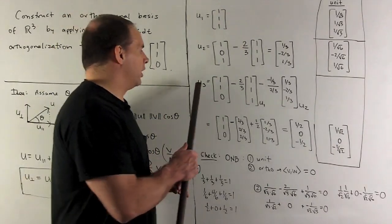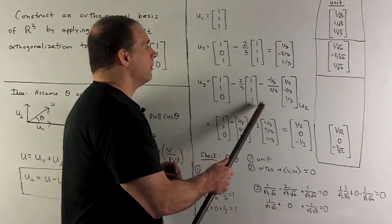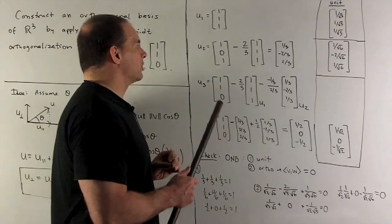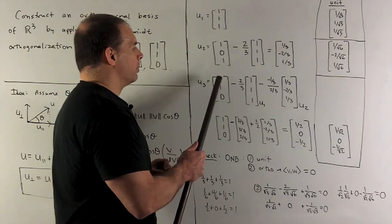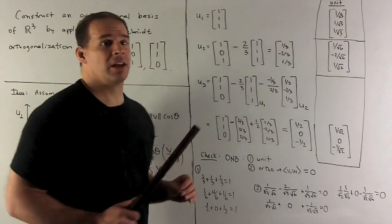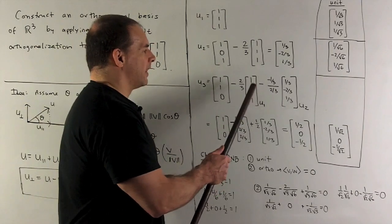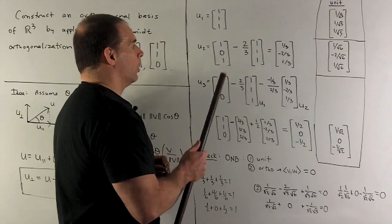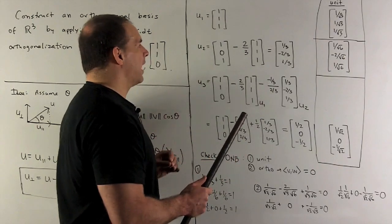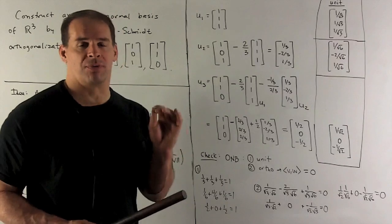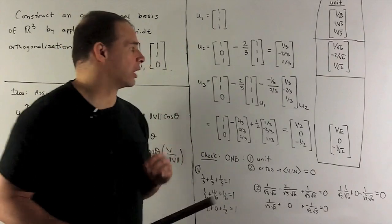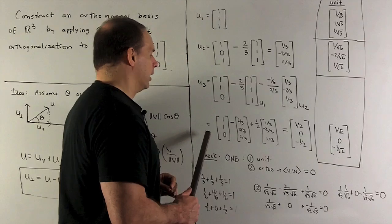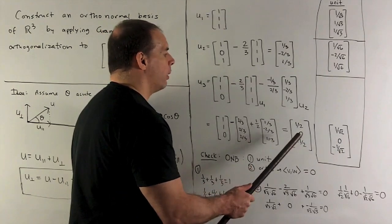For our third vector, we're going to subtract off the part that's parallel to u1 and the part that's parallel to u2. So we're going to do our dot products. Divide by length squared. So dot product of u1 with u3. We get 1 plus 1 plus 0 gives me a 2. The length of u1 squared is a 3. Then we put in our u1. Then that's going to be minus the parallel part to u2. So I take the dot product of u2 with u3. So it's going to give me 1/3 minus 2/3 gives me a 1/3. Then the length of u2 squared is going to be 1/9 plus 4/9 plus 1/9, 6/9. That's going to give me a 2/3. So this term here is going to collapse to a 1/2 and we put our u2 in. We compute what comes out. It's going to be [1/2, 0, -1/2].